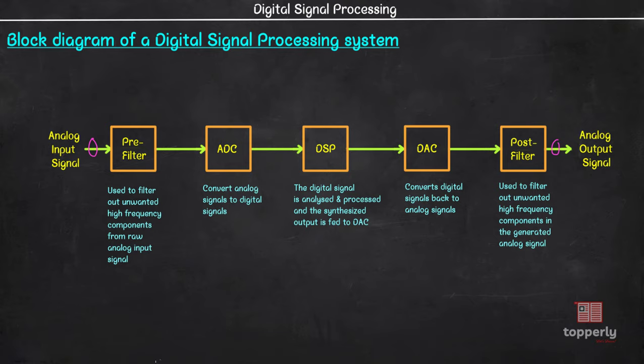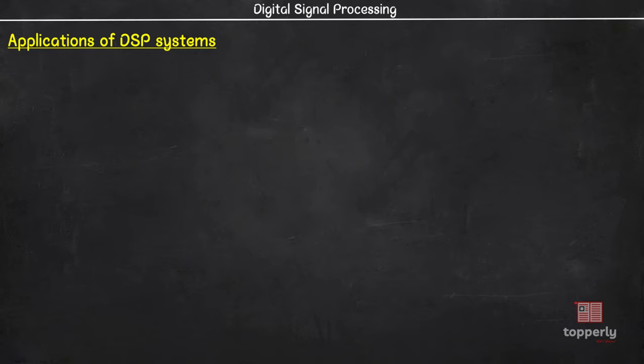Now coming to the applications, we use digital signal processing in many areas. It is used to process speech and audio. This involves speech recognition and analysis, noise filtering, echo cancellation, etc. It is also used to process image and video. This involves compression, enhancement, reconstruction and restoration of images and videos. It also involves face detection, like in the case of face unlock in phones.